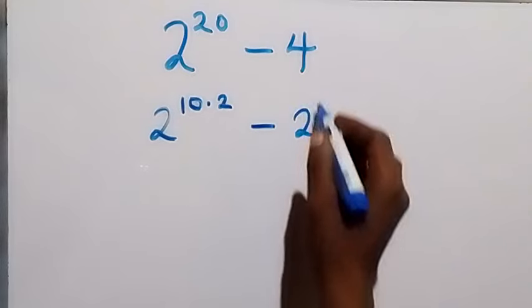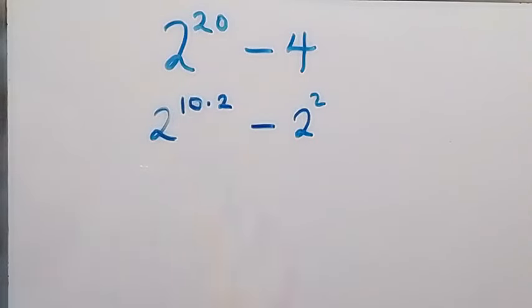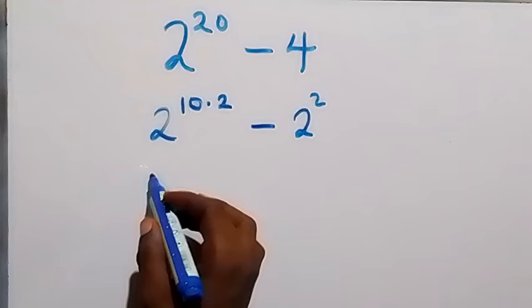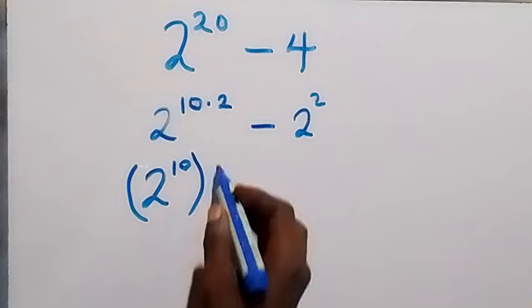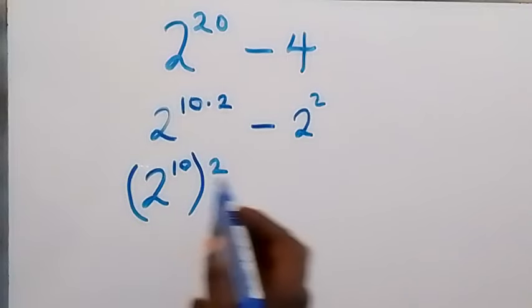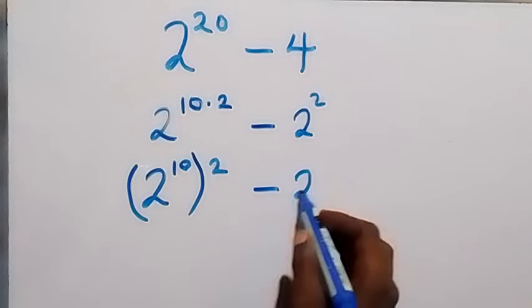From the law of indices, we can equally write this as 2 raised to power 10, raised to power 2 (this is the multiply) and we have minus 2 squared.